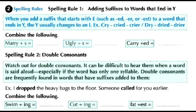Let's move to Spelling Rule Two: double consonants. Watch out for double consonants — it can be difficult to hear them when a word is said aloud, especially if the word has only one syllable. Double consonants are frequently found in words that have suffixes added to them. For example: 'I dropped the heavy bags to the floor'; 'Someone called for you earlier.'